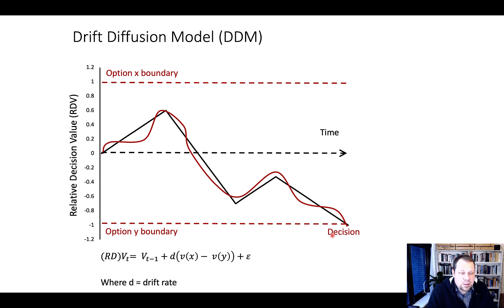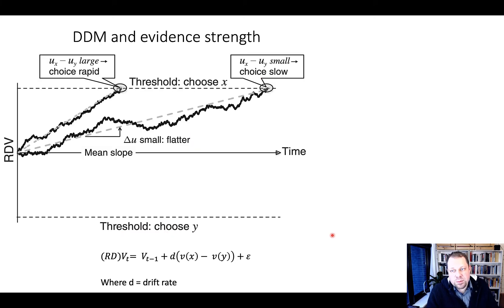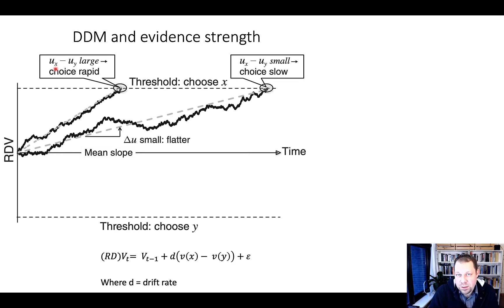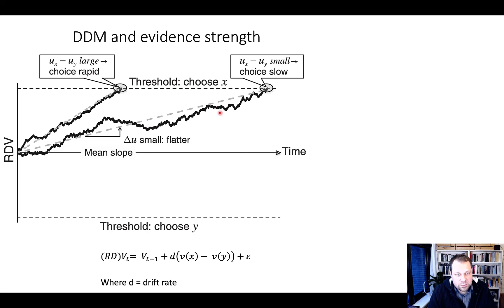This model has interesting features and can explain a number of things we observe. When the difference in value is large — for instance, when I value chips much higher than Twix because I prefer salty foods — the rise to threshold is much faster. However, when the difference is small, the slope takes much longer, resulting in slower choices with a much flatter slope.